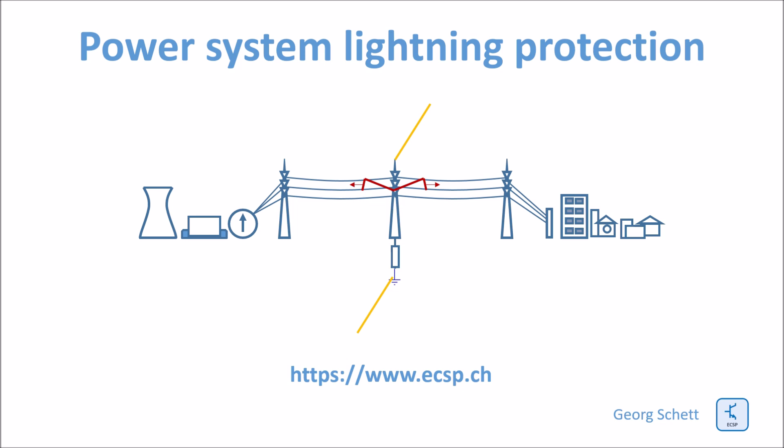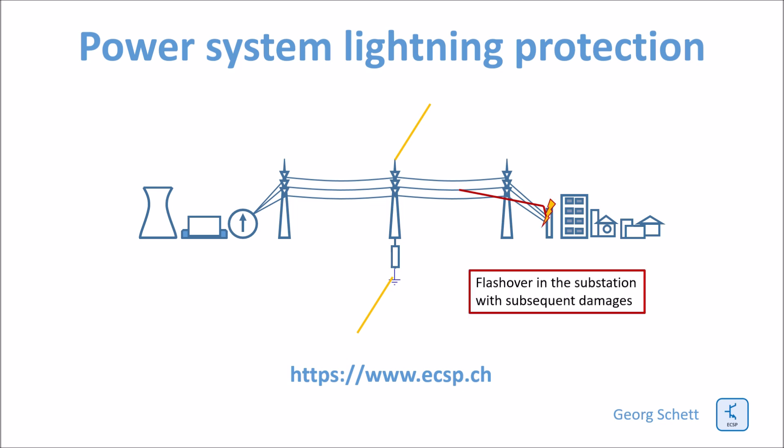The very steep overvoltage forms waves traveling at close to the speed of light towards the ends of the lines, where they hit substations or other equipment. This very high overvoltage hitting the line-end substation may cause two problems: a flashover in the substation with subsequent damage, and damage at the location of the backflash across the line insulator where lightning hit the tower.